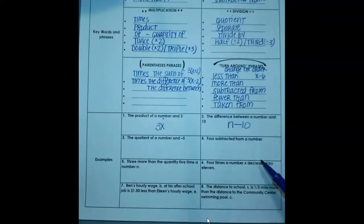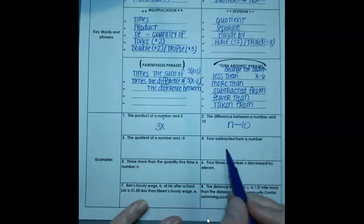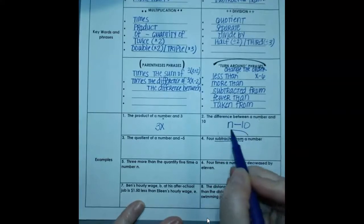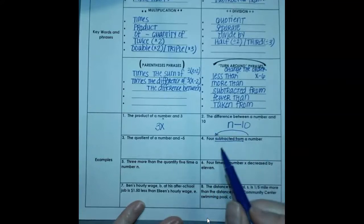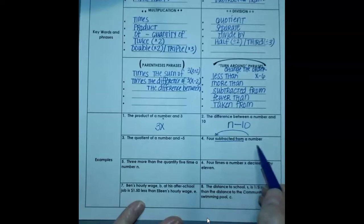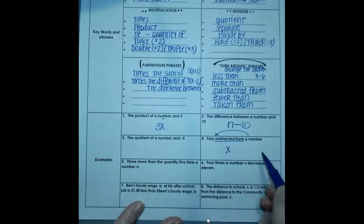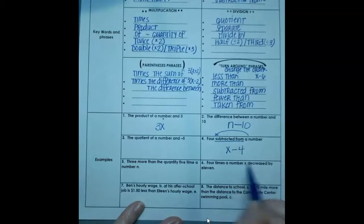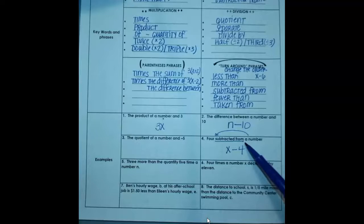But let's look at number four. Number four says four subtracted from a number. So here we have those words subtracted from. What that means is you want to swap the order and turn them around. So it's not four minus a number. It's really a number minus four. What is that number? I don't know. Use a letter. Sometimes they tell you what letter to use and sometimes they don't. So a number minus four. Four subtracted from a number. This is four being subtracted from some number. So just be very careful and be on the lookout for those turnaround phrases.